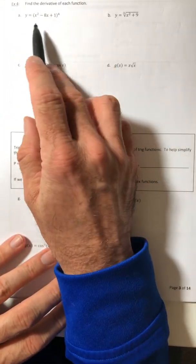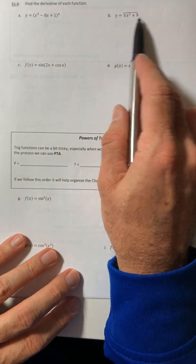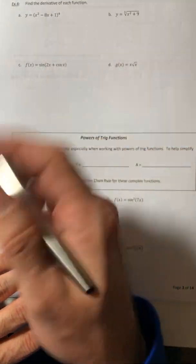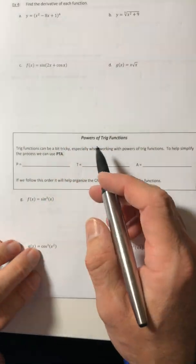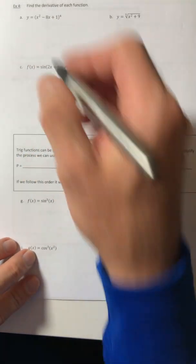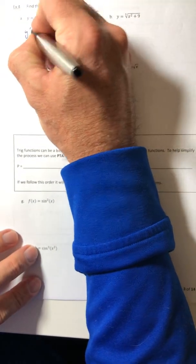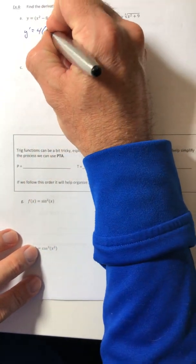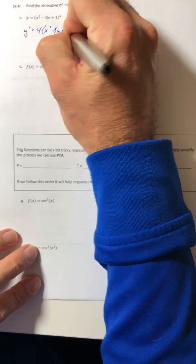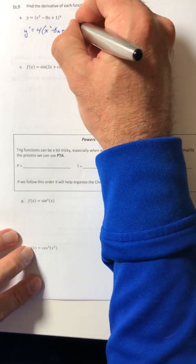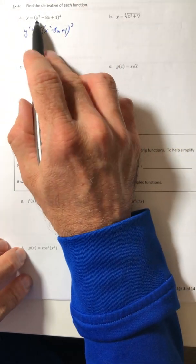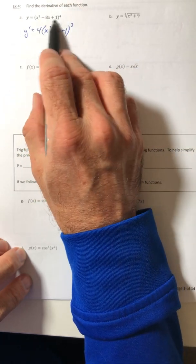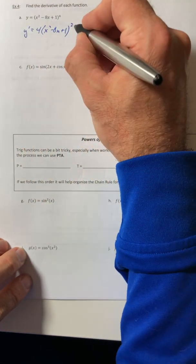Find the derivative of each function. For parts a and b especially, we've got exponents involved, so let's use the power rule. I can pull the four down, decrease the power by one, and then do the derivative of the inside. The inside is u, so u prime is the derivative of what's inside the parentheses, which would be 2x.